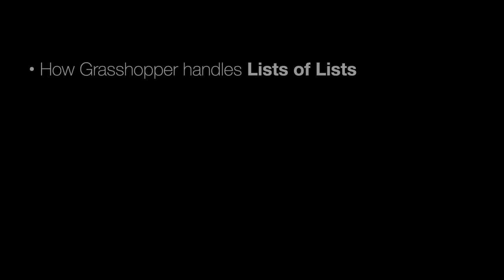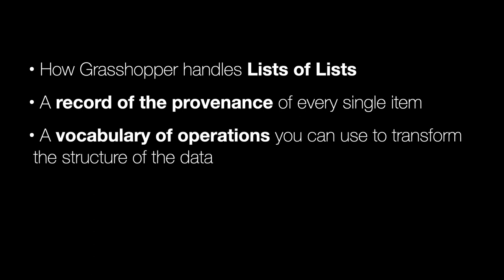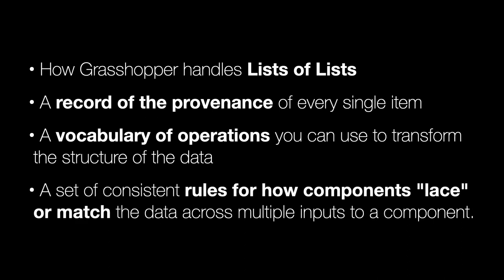What are they? Data trees are how grasshopper handles lists of lists. They're a record of the provenance of every single item. They're a vocabulary of operations you can use to transform the structure of the data and a set of consistent rules for how components lace or match the data across multiple inputs to a component. So I'll explain each of these in turn.